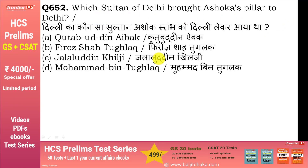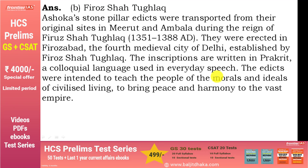Which Sultan of Delhi brought Ashoka's pillar to Delhi? वो है option number B — फिरोज शाह तुगलक. इन्होंने Ashokan pillars को उनकी original sites मेरठ और अंबाला से लाया था, फिरोज शाह तुगलक के reign के अंदर. ये inscriptions प्राकृत language में हैं, जो उस समय की आम बोलचाल की भाषा थी. इनमें बताया गया है कि लोगों को morals और ideals, ताकि उस बड़े empire के लोग आपस में peace और harmony में रह सकें.